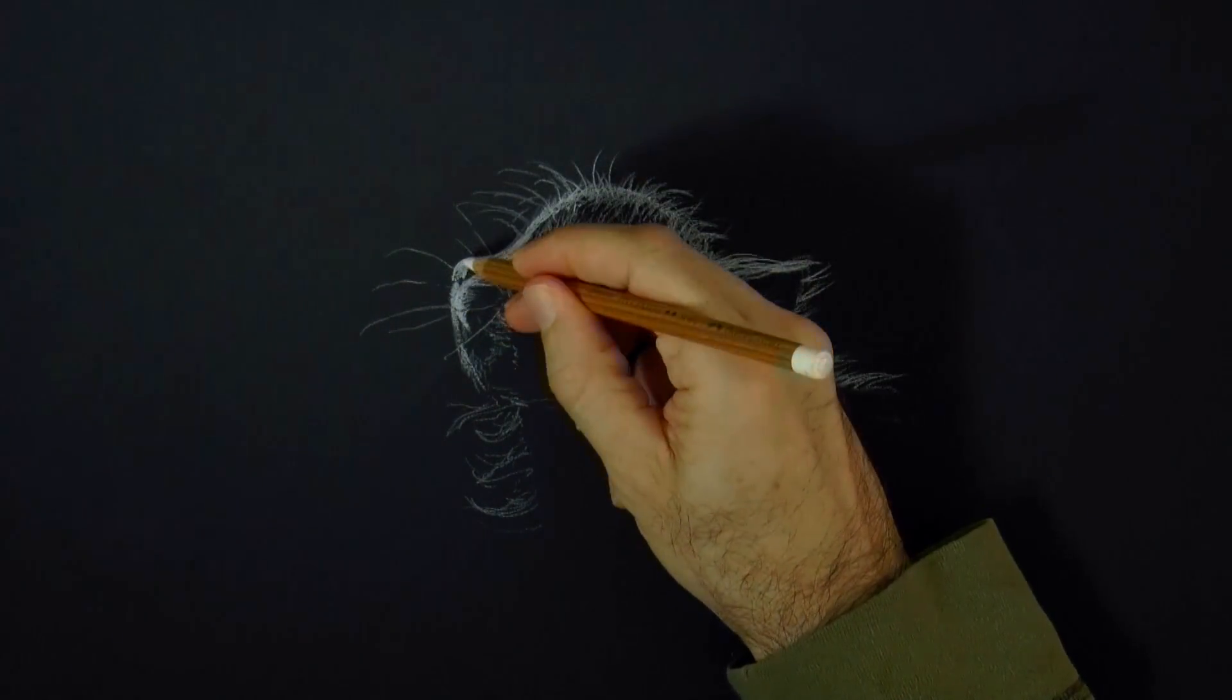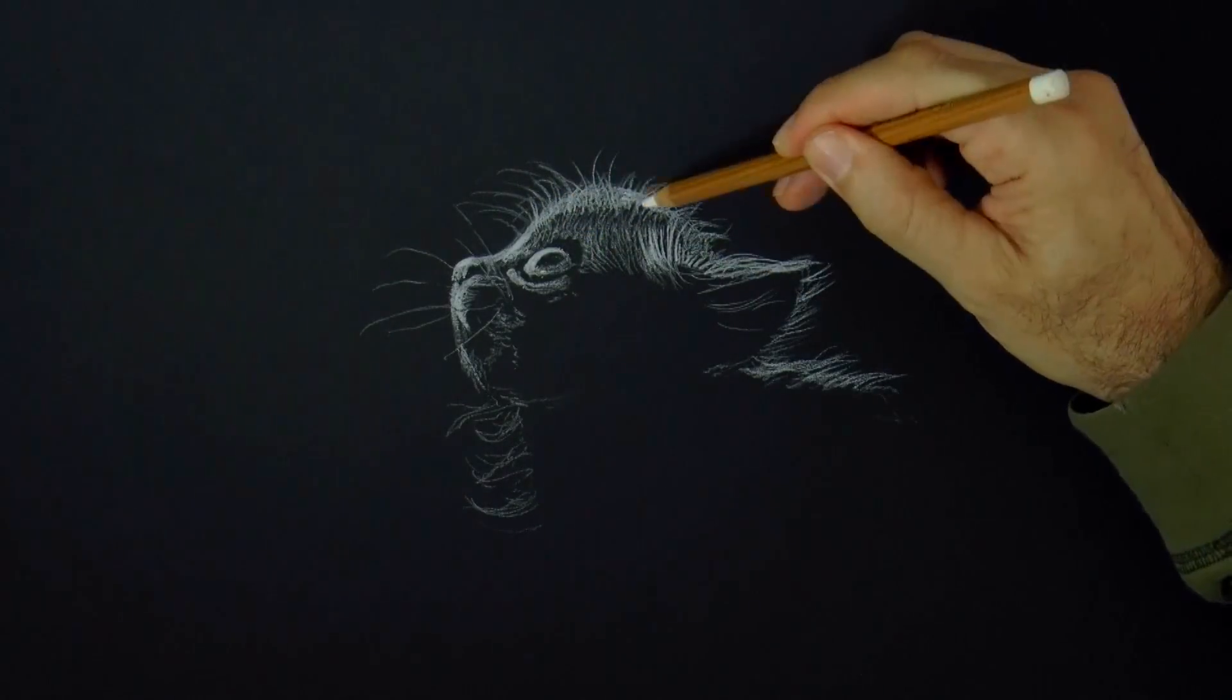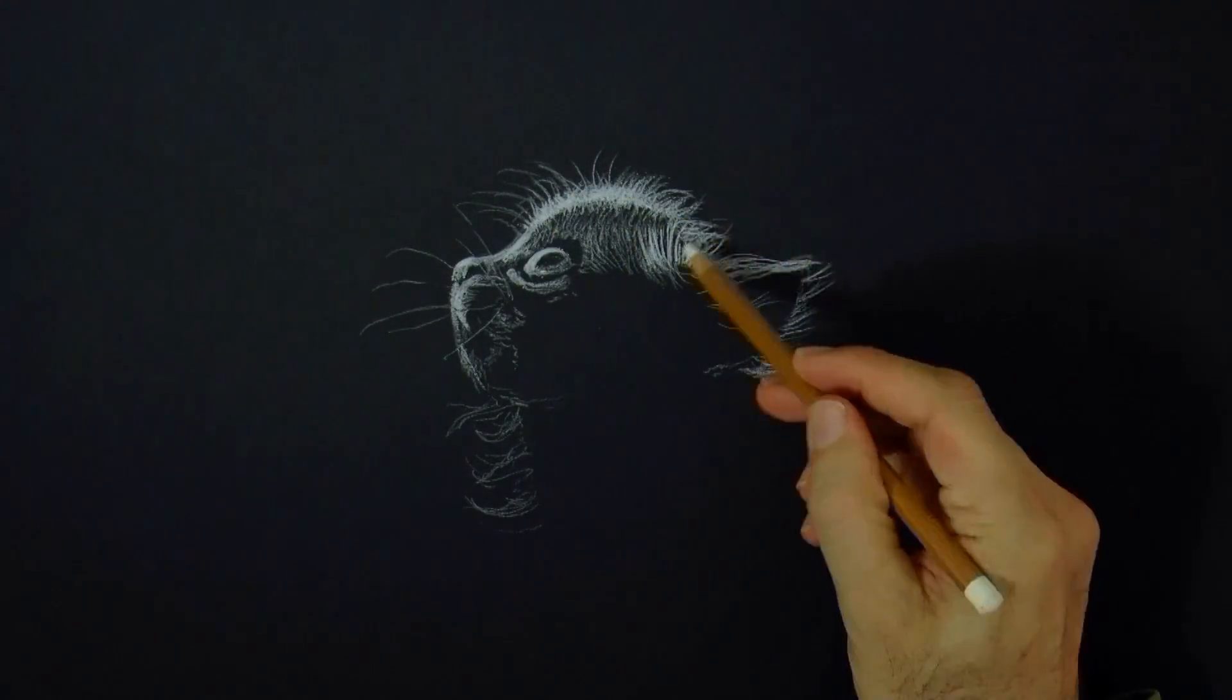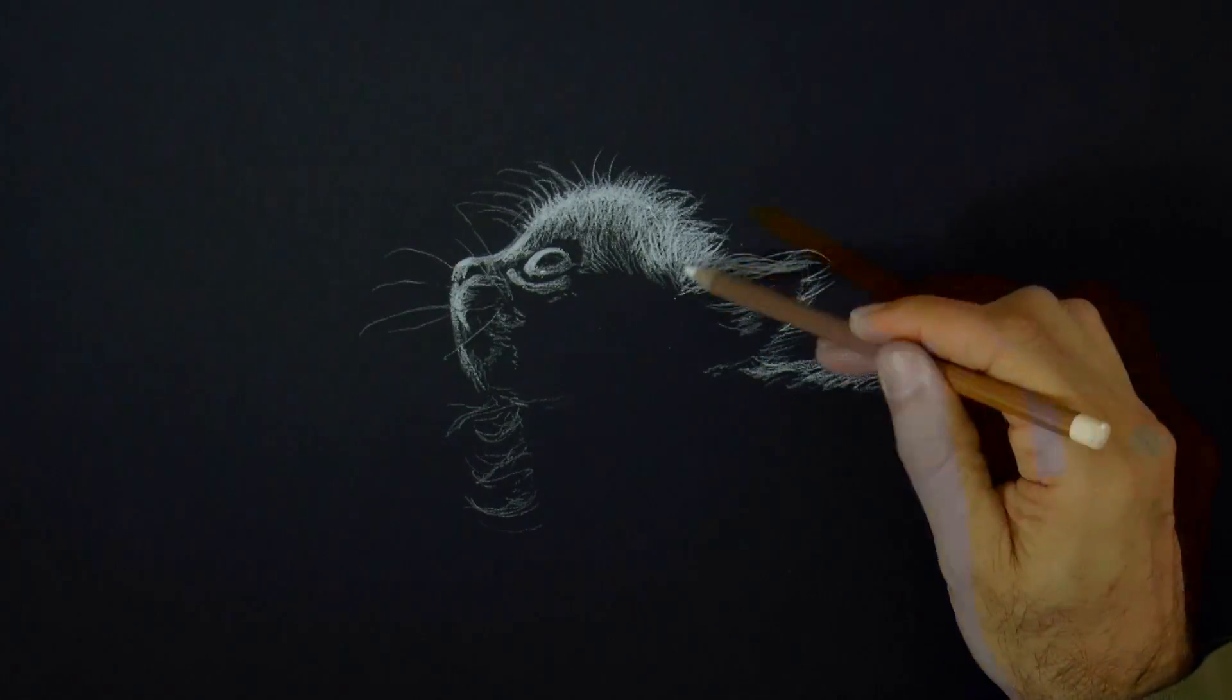We did the whiskers, as you saw, now some highlight on the nose, and on the head. All the upper part of the head should be more white. I think it is looking pretty good.